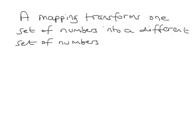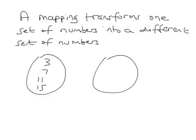OK, so a mapping transforms one set of numbers into a different set of numbers. So you take the numbers 3, 7, 11, 15, take another set of numbers 33, 77, 121 and 165.